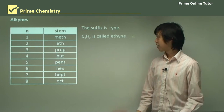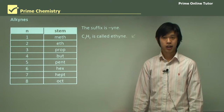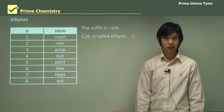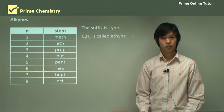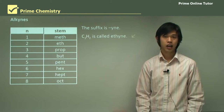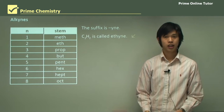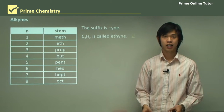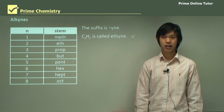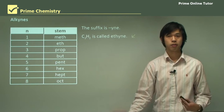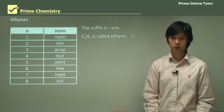That wraps up today's lesson on naming hydrocarbons, or hydrocarbon nomenclature. We spoke about the different types of hydrocarbons, and in particular we talked about aliphatic hydrocarbons and their three subtypes: alkanes, alkenes, and alkynes. We'll move on now to the question section, and hopefully you'll be able to use what we just spoke about to answer these questions.